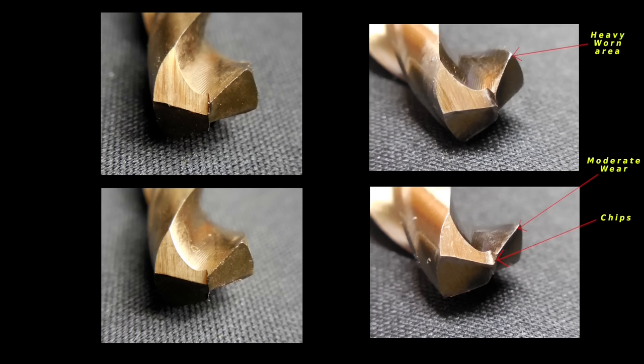You're now looking at the DeWalt bit. The two on the left are new. If you take a look at the top right, you're going to see the cutting edge itself isn't bad, with the exception of that one spot where there's a heavy worn area towards the outer edge. If you look at the lower right image, you're going to see the entire cutting edge show signs of moderate wear when you compare it to the one on the lower left. And you can also see there's some chips missing from the tip of the bit.